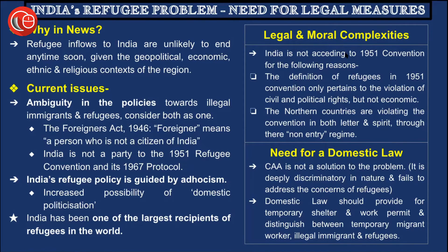Regarding the legal and moral complexities, India is not acceding to the 1951 convention for several reasons. First, the definition of refugees in the 1951 convention only pertains to violations of civil and political rights, but not economic rights, making the definition narrower. Second, northern countries that have signed the convention are violating it in both letter and spirit through their non-entry regimes. This removes any incentive for India to join the convention and recognize refugees as distinct from illegal immigrants.